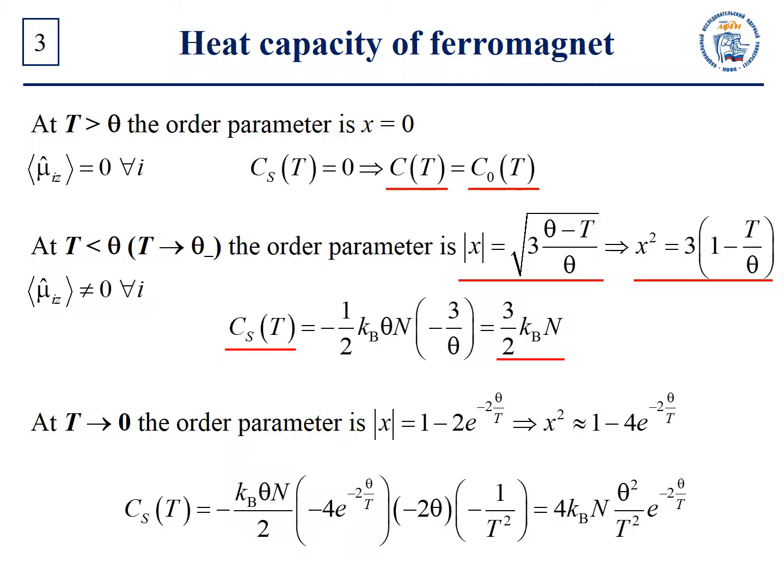At T greater than theta, we have zero mu_Iz for any i, and at T less than theta, we have nonzero mu_Iz for any i — the nonzero mean magnetic moments of all atoms appear. Every degree of freedom has associated with it, on average, energy of one-half Boltzmann constant times T.